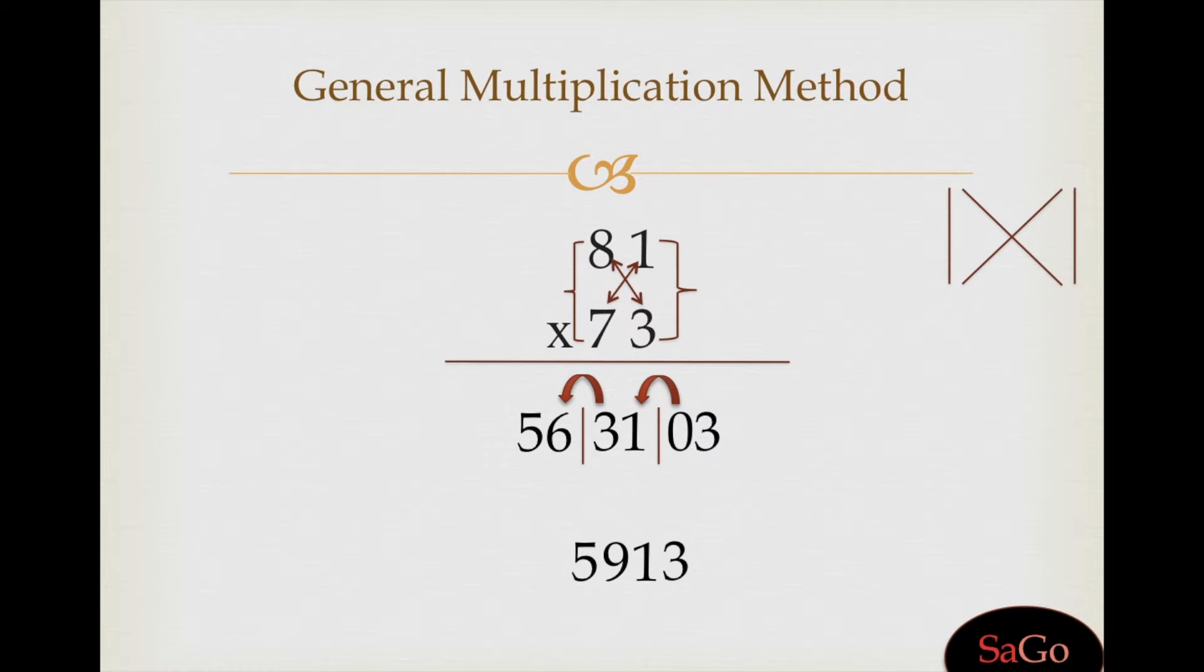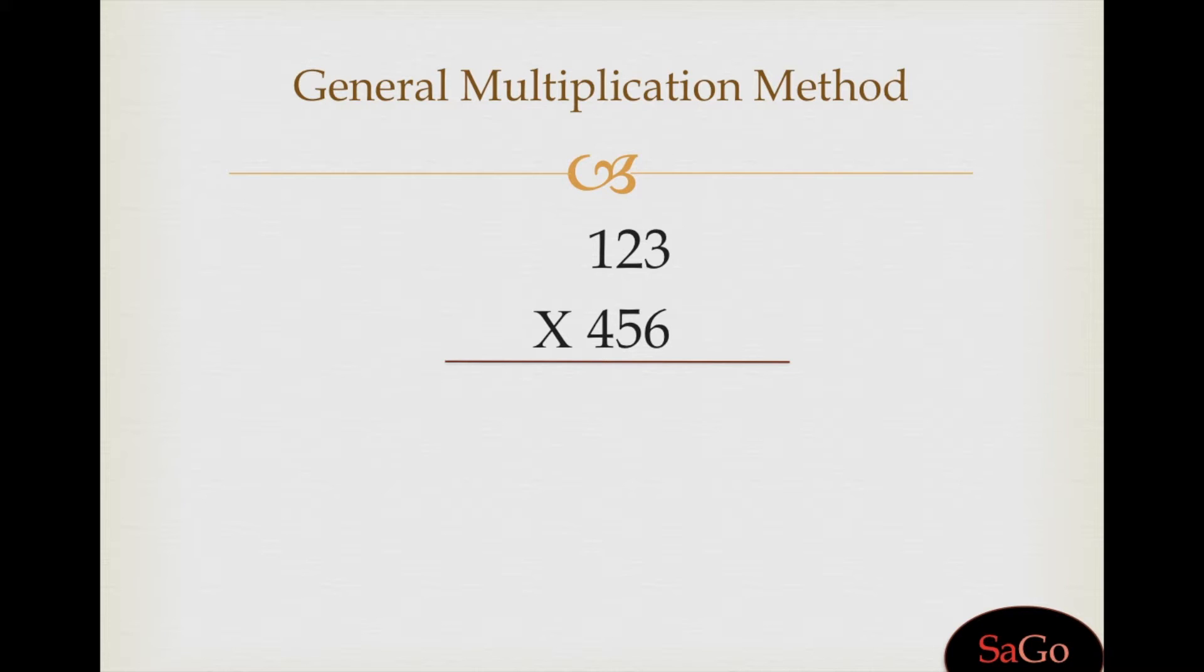Now it's time to multiply 3 digits by 3 digits through the general method. The pattern will be slightly different: I × star × I. I means the I on the right-hand side, 3 and 6: 3 times 6 is 18. Put a slash.